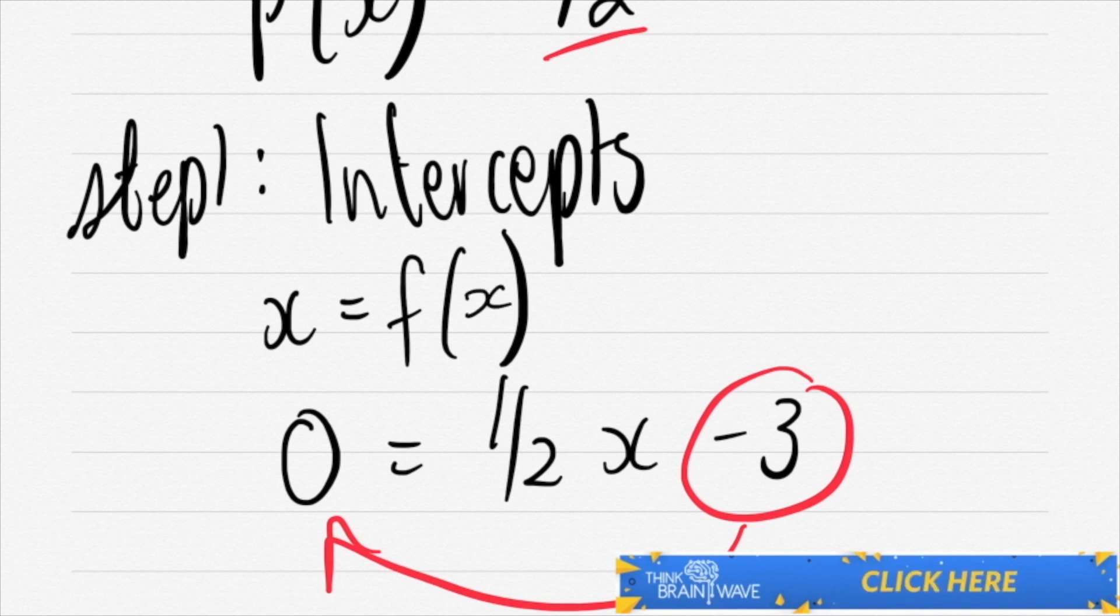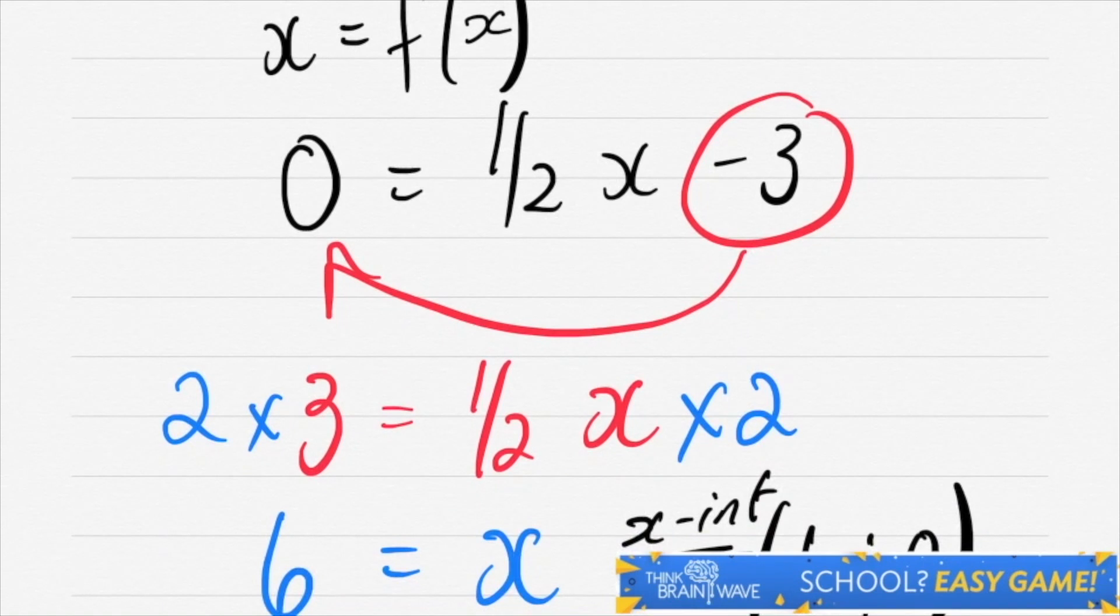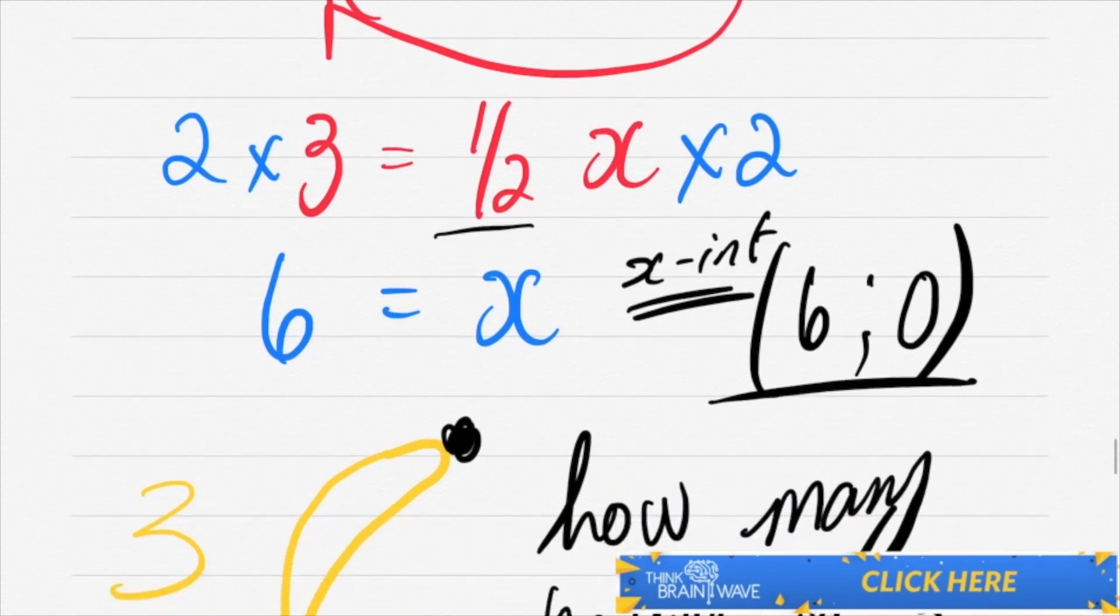So let's continue. You've got 0 = 1/2 x - 3. Take your minus three across, you get 3. You then times both sides by two to get rid of this half. So the two times a half is one. Two times three is six. You're left with six is equal to x. You found your intercept for x.